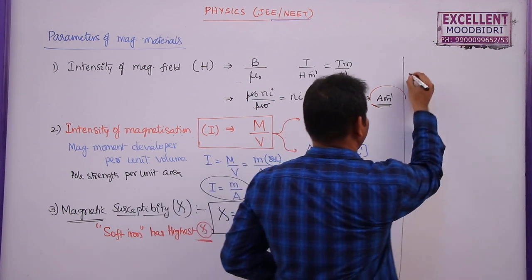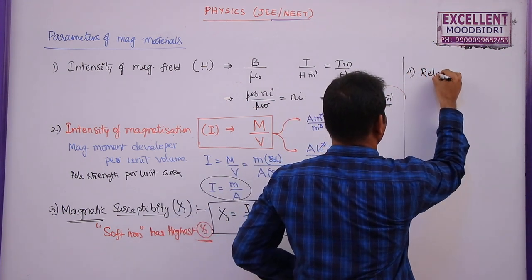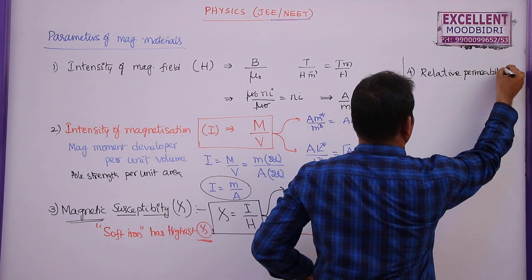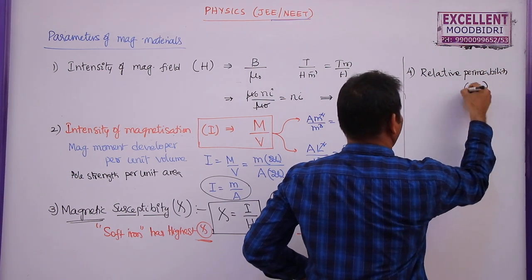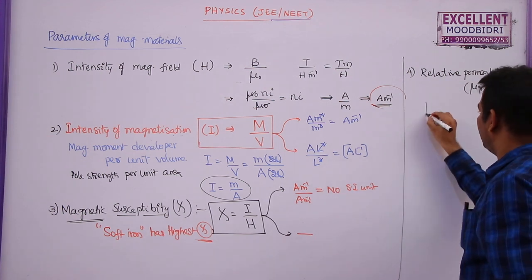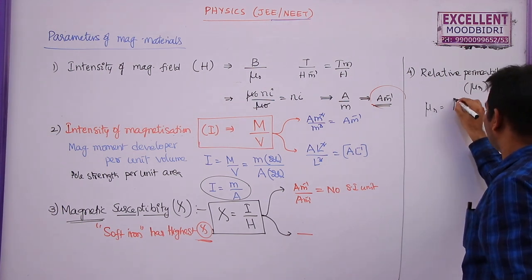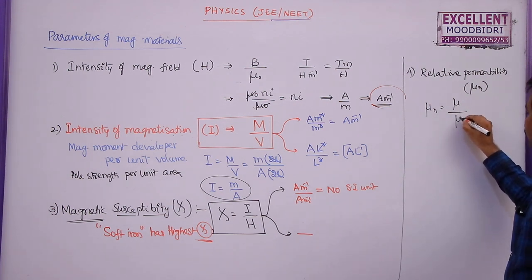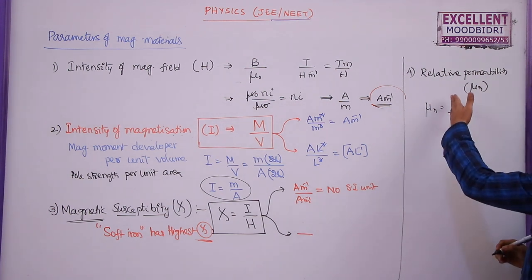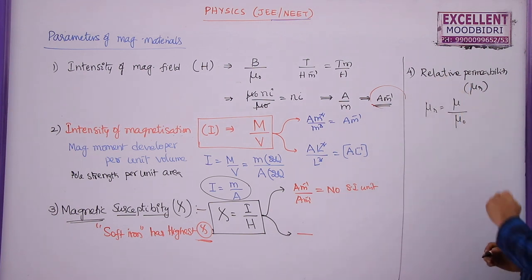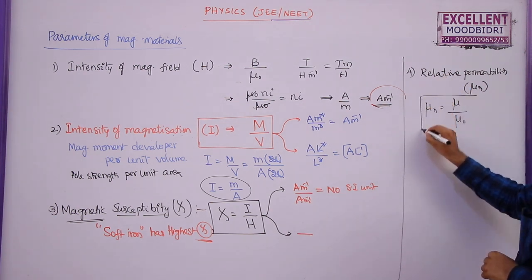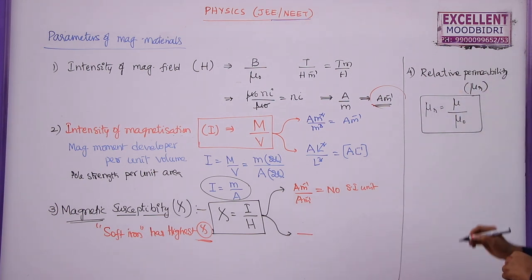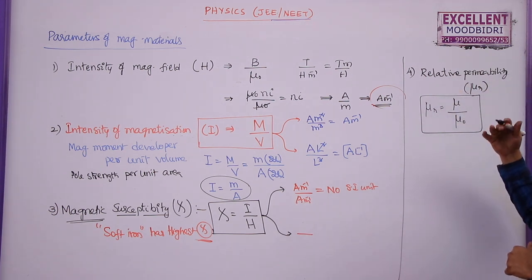The fourth parameter is relative permeability, denoted μR. It is the ratio between the permeability of a given material to the permeability of free space. As it is a ratio between two permeabilities, it has no unit and no dimensional formula.